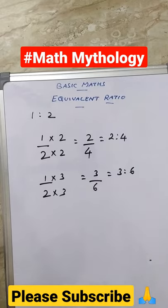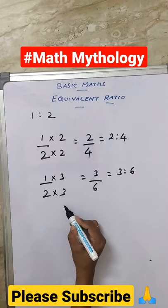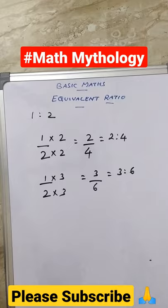Like this, you can find any number of equivalent ratios by multiplying common numbers on numerator and denominator. If you like this video, please like, share, and subscribe my channel. Thank you.